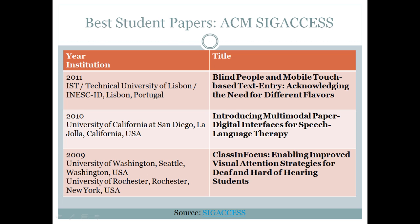Just to give you a quick idea of the types of papers that get accepted as the best student papers, here are the top three for the last three years — the best student papers for the ACM SIG Access Group. ACM is the Association of Computing Machinery. SIG is a special interest group. SIG Access is the special interest group on accessibility, which covers the needs of the blind, deaf, and people with special needs.